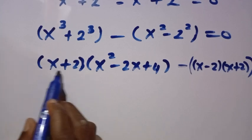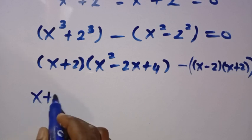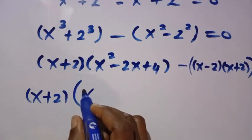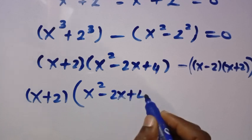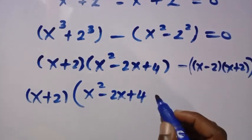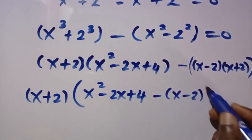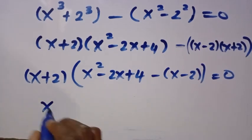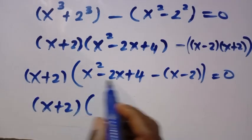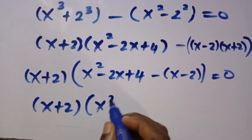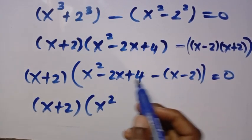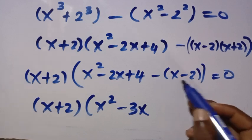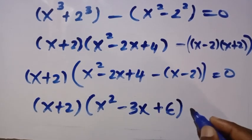Here we have x plus 2, and this is also x plus 2, so factoring out x plus 2, we create a larger bracket. Dividing the first one by x plus 2 gives x squared minus 2x plus 4, and dividing the second by x minus 2 gives minus open bracket x minus 2. Opening with negative, we get minus x and minus 2, giving us minus 3, and with negative times negative we get positive plus 4, that is plus 6, equals 0.